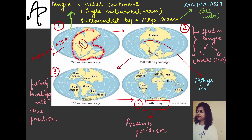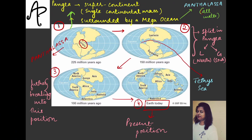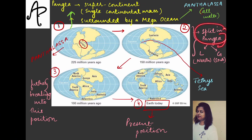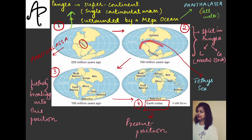This supercontinent Pangaea was surrounded by a mega ocean called Panthalasa, which means 'all water.' Then in the further course of time, somewhere around 150 million years ago, there was a split in Pangaea and it divided into the northern and southern parts. The northern part was known as Laurasia and the southern part was known as Gondwana land.